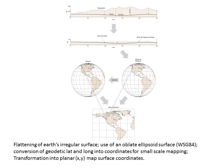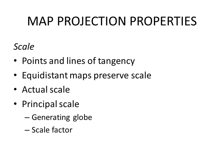In other words, we want to see a correspondence between the points on the globe and the points that result on the Earth's surface on the map. There are several important things that relate to the scale of how map projections are drawn, and that involves points and lines of tangency, equidistant maps, the use of actual scale, as well as principal scale.